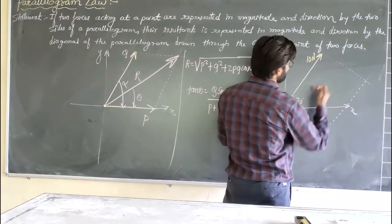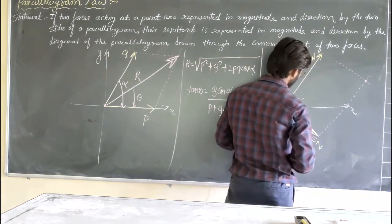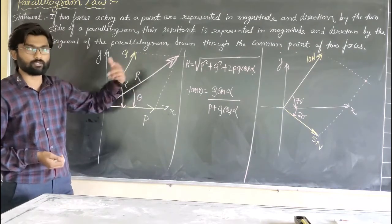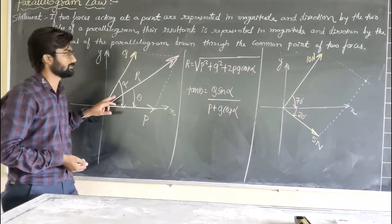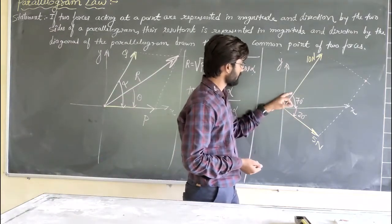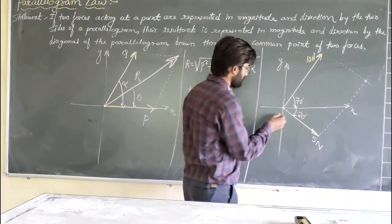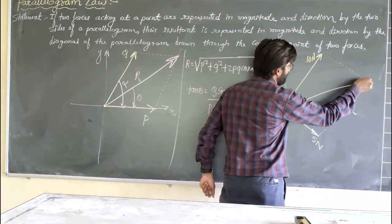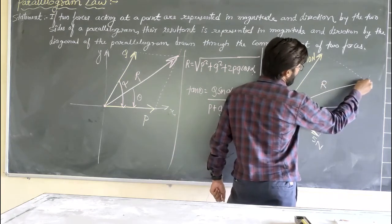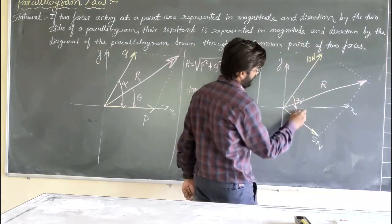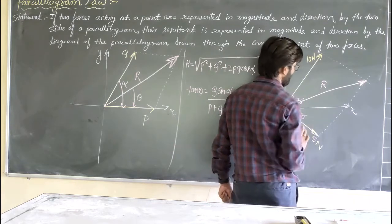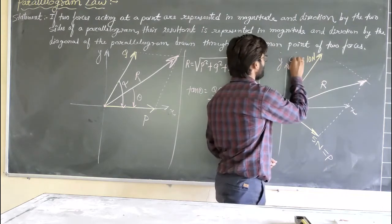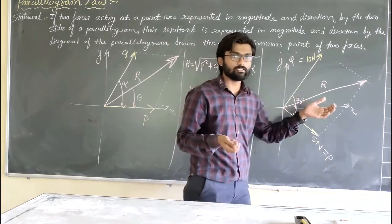We have now converted the two forces into a parallelogram where opposite sides are parallel, and we have the intersection point. The resultant is the diagonal of the parallelogram passing through the common point of the two forces. The direction of R is away from the common point, so the resultant moves in the first quadrant.